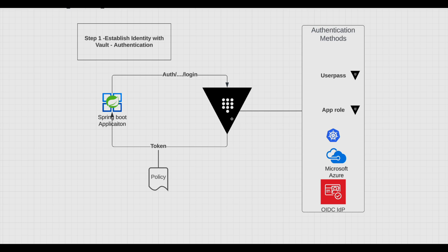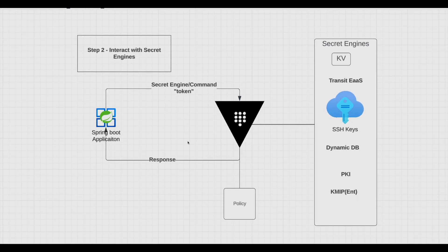The application authenticates itself to Vault using the chosen authentication method, and Vault returns a token to that application. Attached to that token is a policy that defines what permissions the application has. Everything in Vault is path-based. The application can then retrieve secrets — this could be key-value pairs, static SSH keys, or dynamic credentials. The policy ensures that the application is only consuming the secrets it is allowed to.